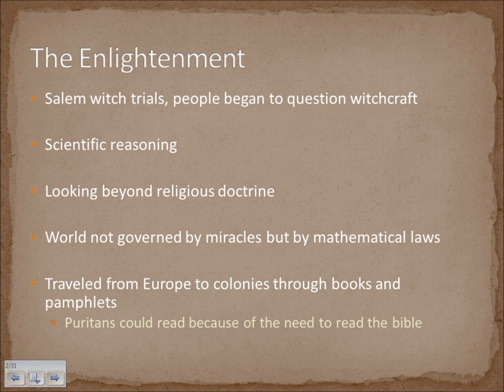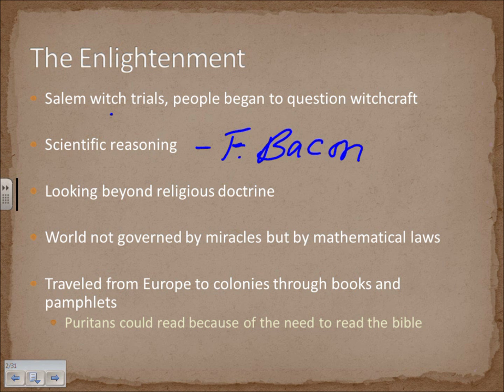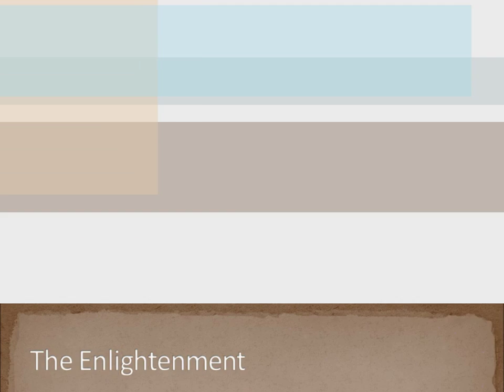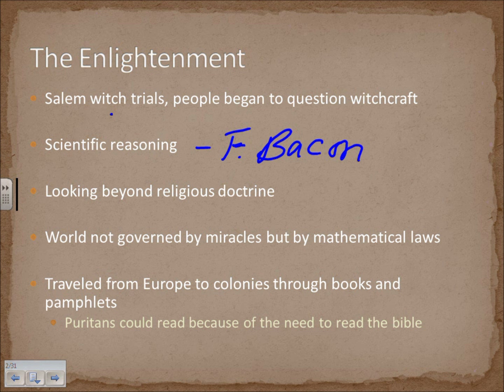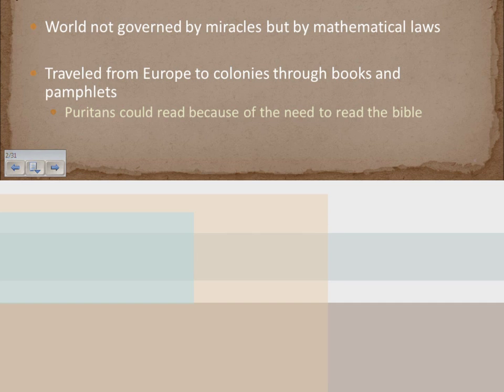Scientific reasoning was based on the light method from Francis Bacon, who came up with our modern scientific method involving observations, hypotheses, testing, and forming a theory. People began to look beyond religious doctrine to answer big questions in life. They started to develop the sense that the world was not governed by miracles but by mathematical and physical laws, such as gravity.